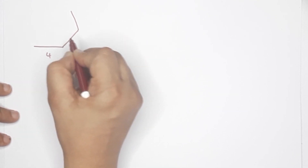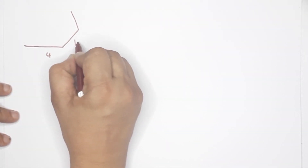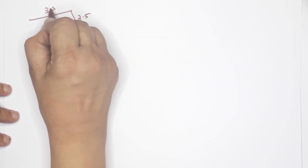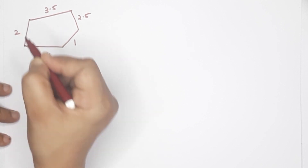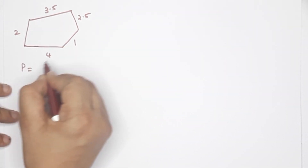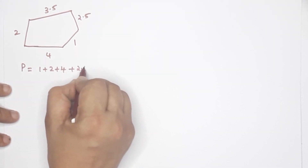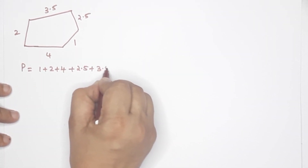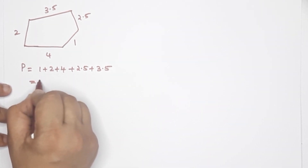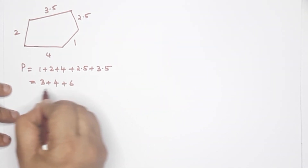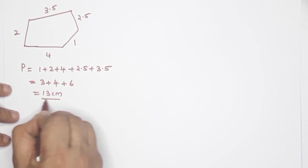Now we have different types of polygons. We have a pentagon. This is a pentagon. This is 4 cm, this is 1 cm, this is 2.5 cm, this is 3.5 cm, this is 2 cm. We have to calculate the perimeter: 1 plus 2 plus 4 plus 2.5 plus 3.5 — we have to add them. That gives us 13 cm. This is the perimeter.